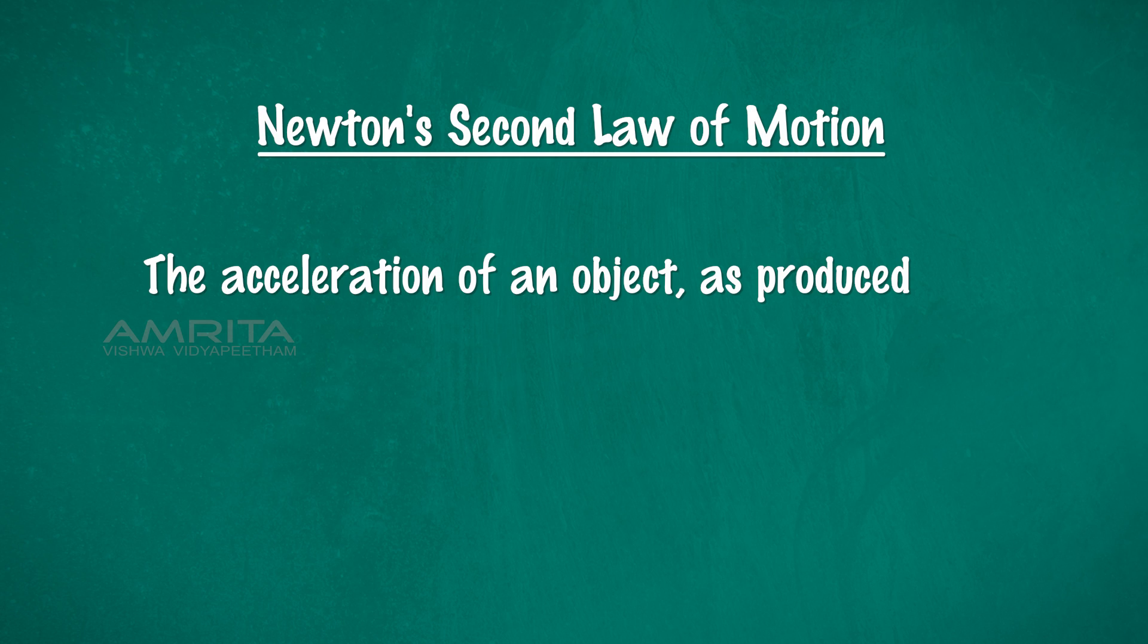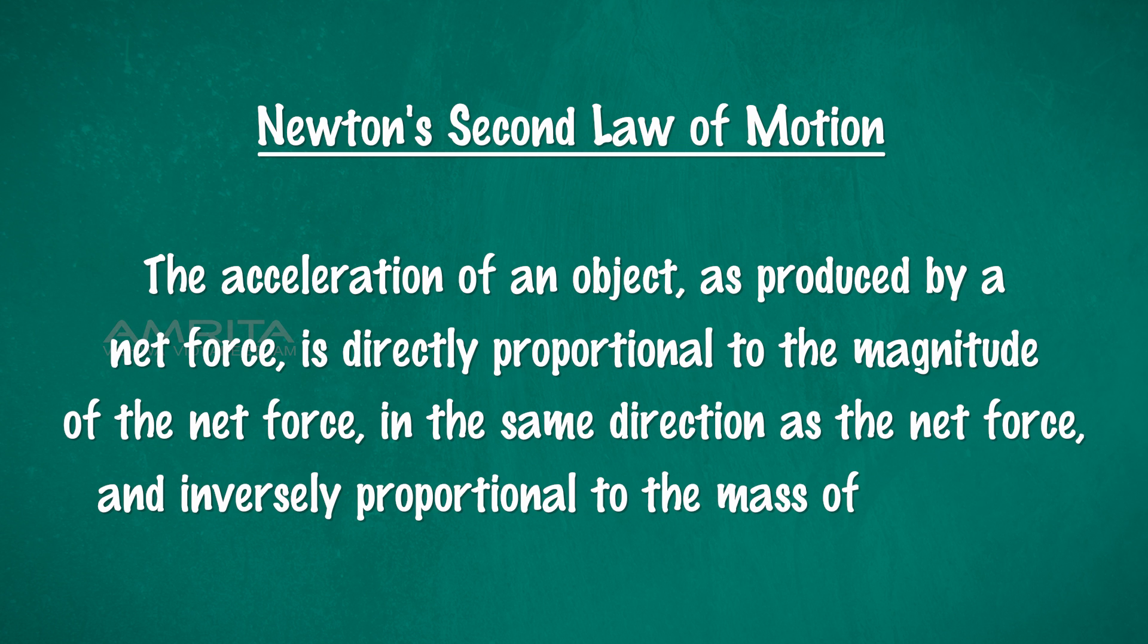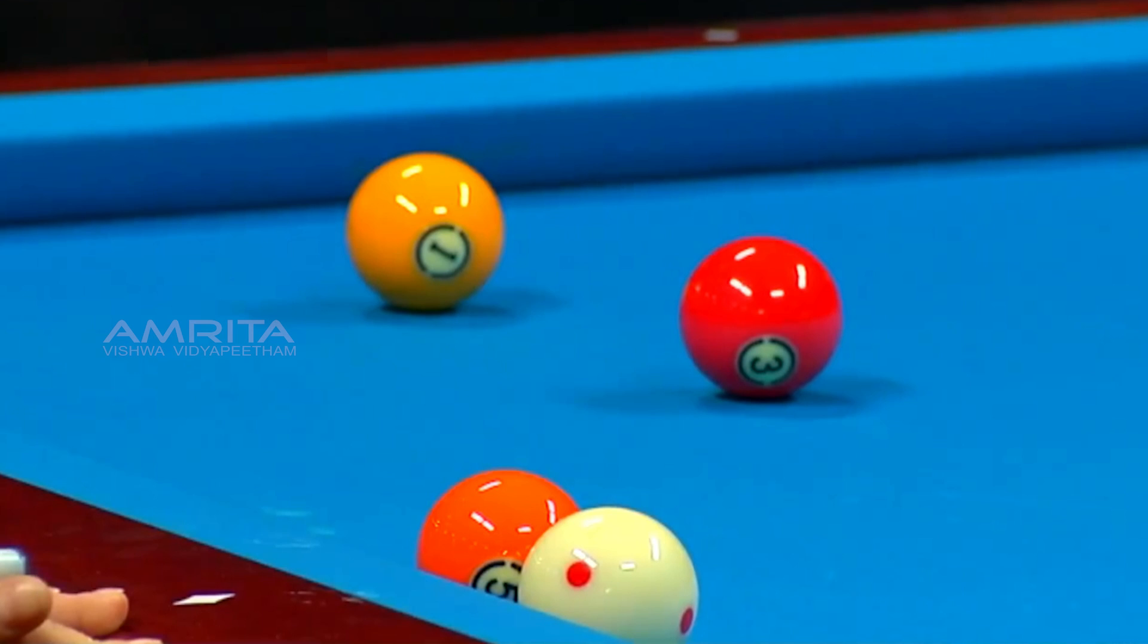Newton's second law of motion can be formally stated as: the acceleration of an object as produced by a net force is directly proportional to the magnitude of the net force in the same direction as the net force and inversely proportional to the mass of the object.